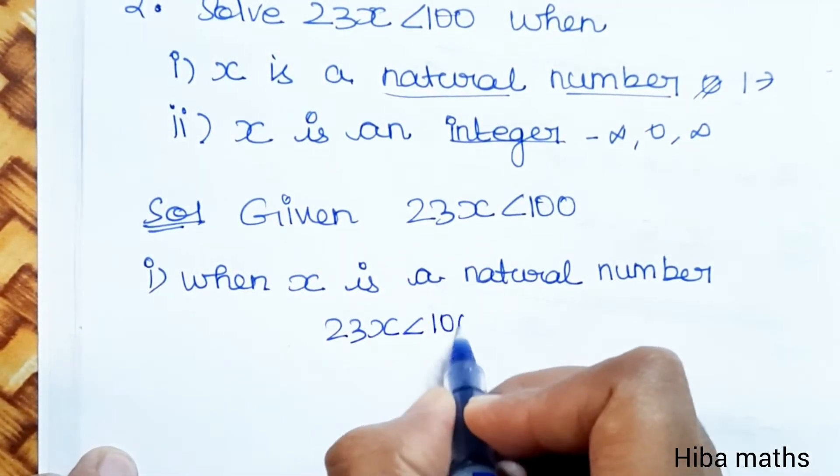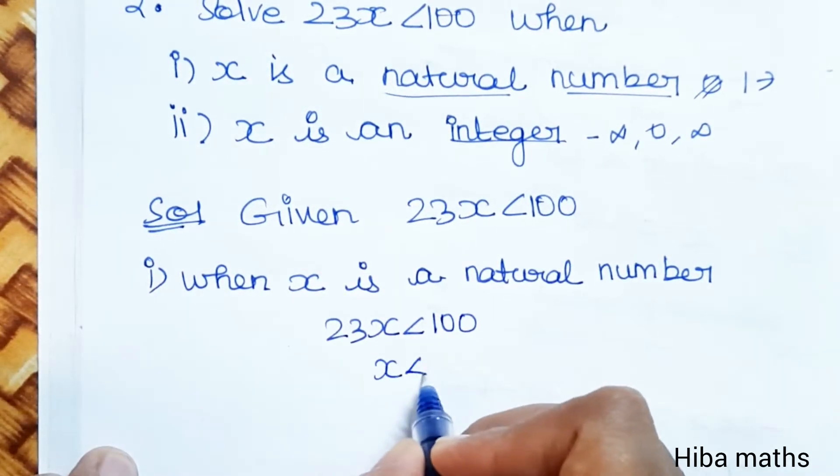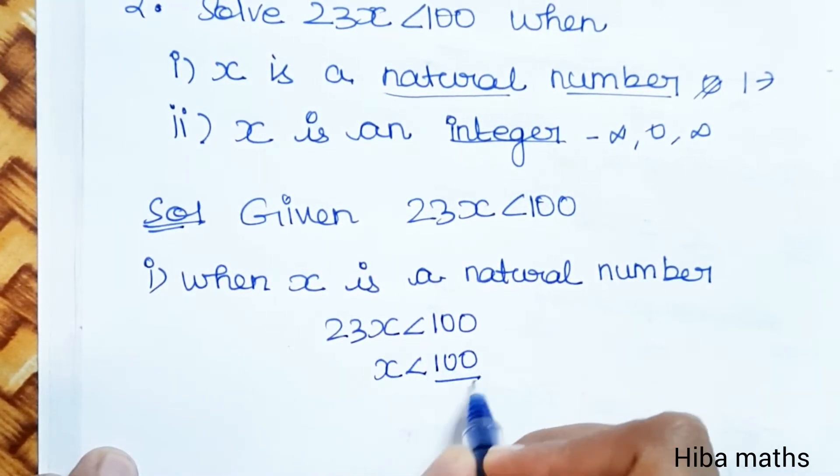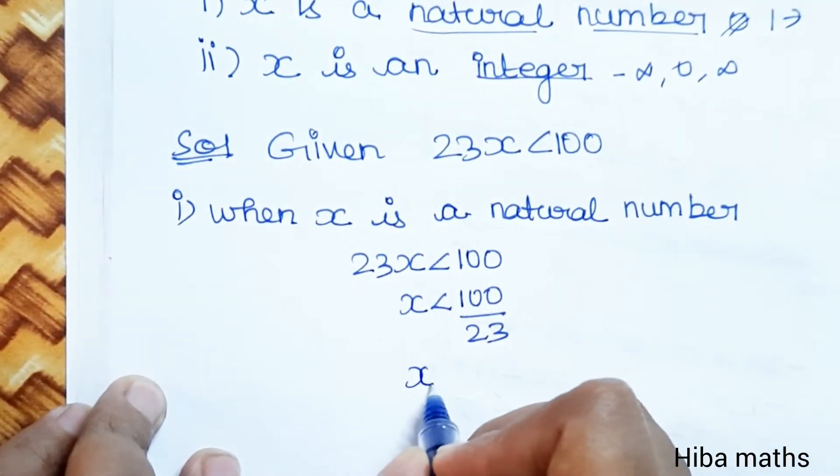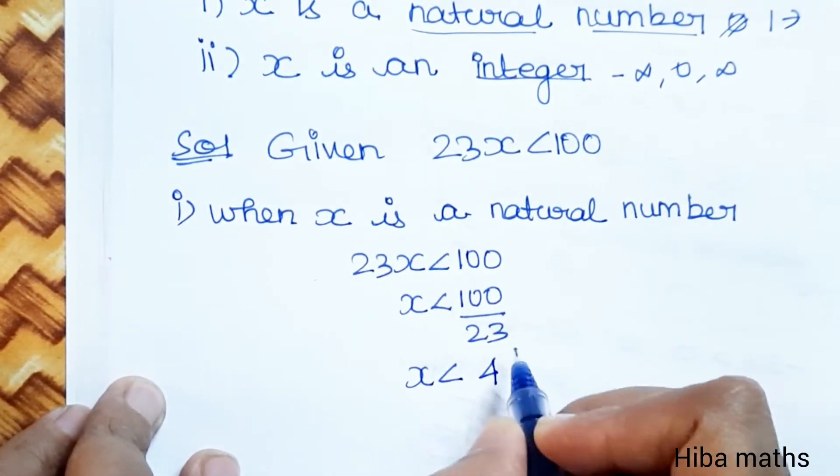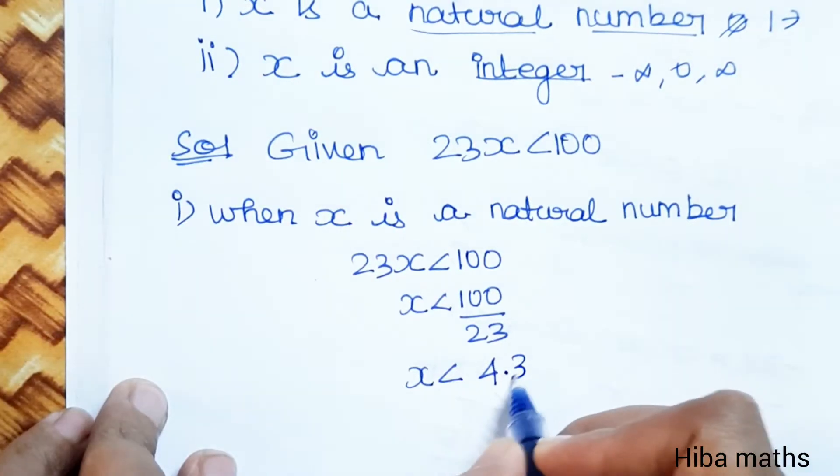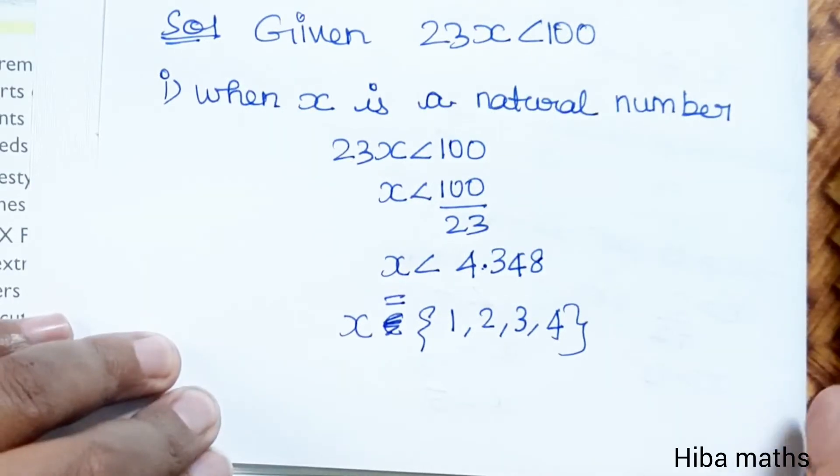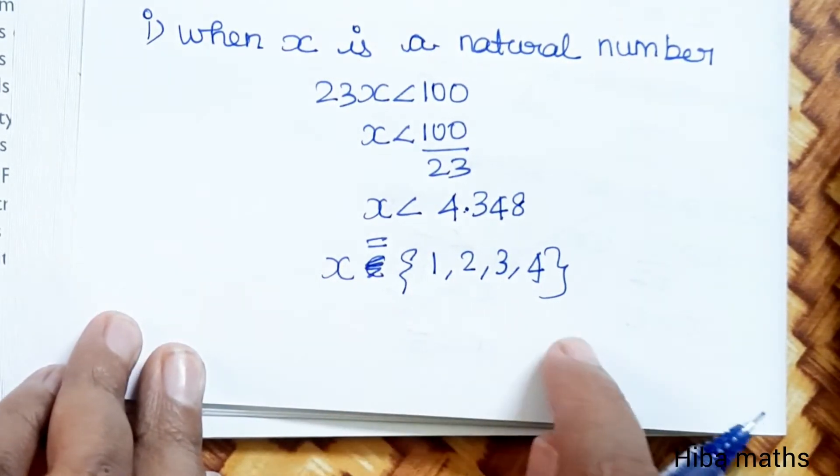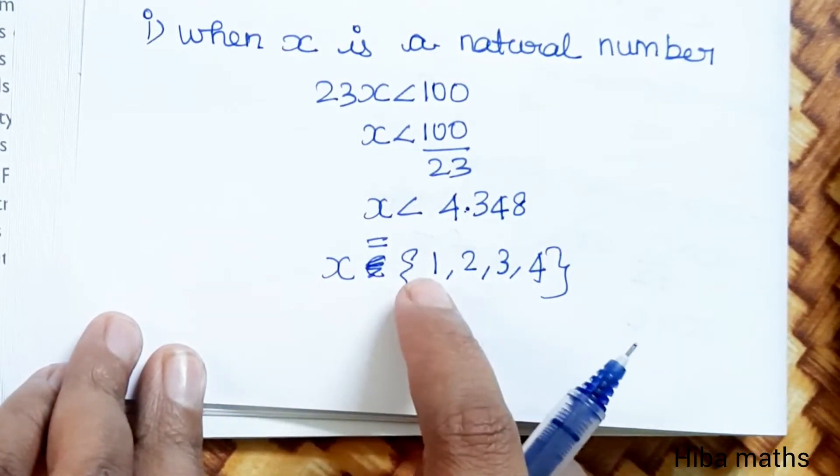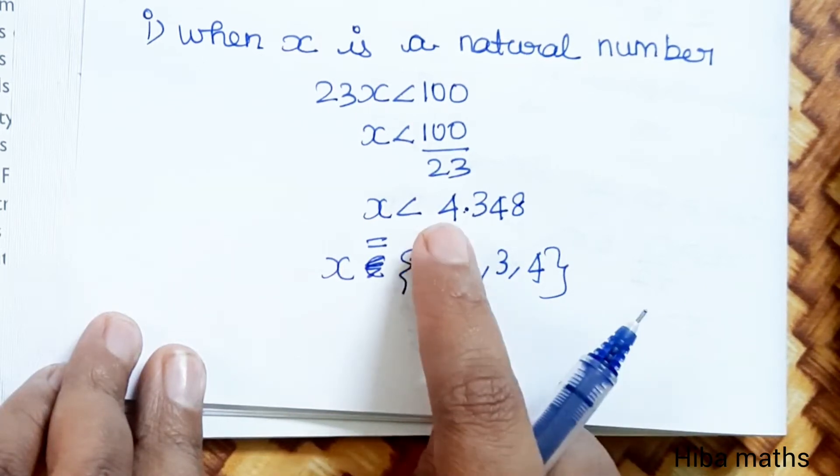23x less than 100, so x is less than 100 divided by 23. 100 divided by 23 equals 4.348. x is less than 4.348, so x equals the natural numbers one, two, three, four.